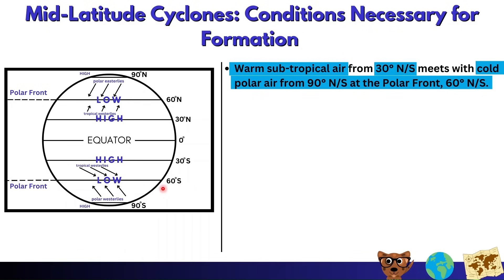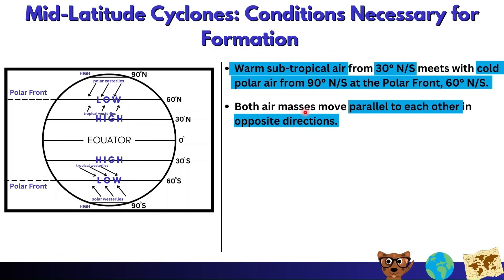In the southern hemisphere, warm subtropical air from 30 degrees south meets cold polar air from 90 degrees south, and they meet at 60 degrees south, also known as the polar front. Both air masses move parallel to each other in opposite directions. In the northern hemisphere, cold polar air moves south while warm subtropical air moves north.